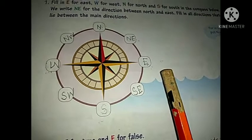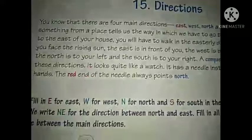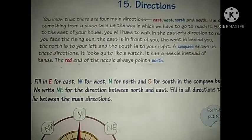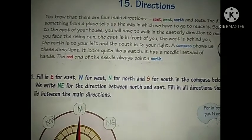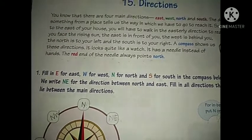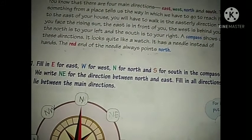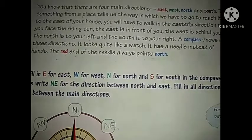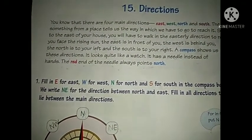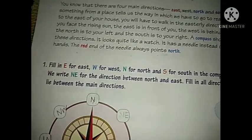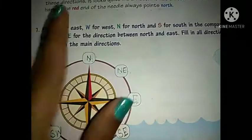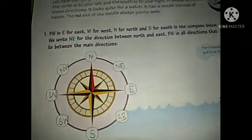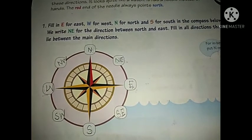Okay, so today please read your lesson practically. See the directions I have told you — where the sun rises is East, behind you is West, left is North, and right is South. And the intermediate directions between these are North-East, North-West, South-East, and South-West. Read your book and practice identifying these directions. Okay, bye bye!